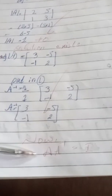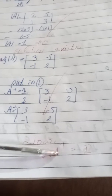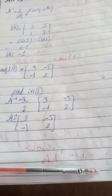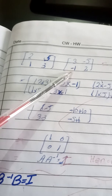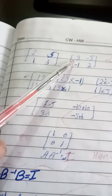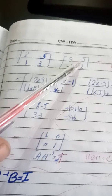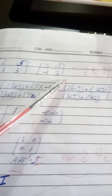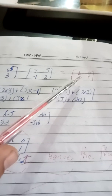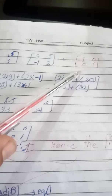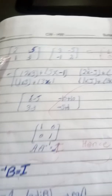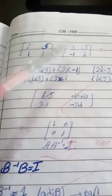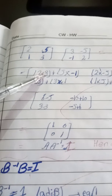Now we proceed towards the solution of A times A inverse equals I. We have to prove this result. Matrix A was given as [2, 5, 1, 3] and the multiplicative inverse is calculated as [3, -5, -1, 2], and their product should equal I, the identity matrix.